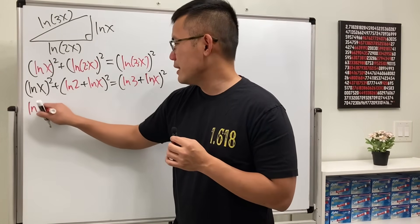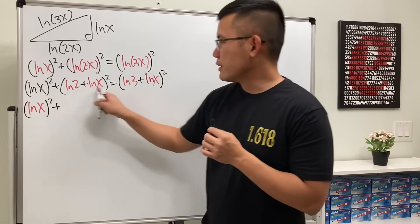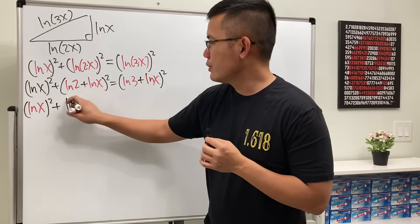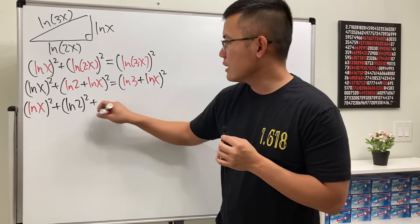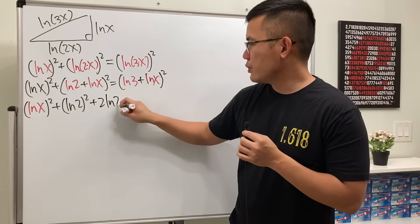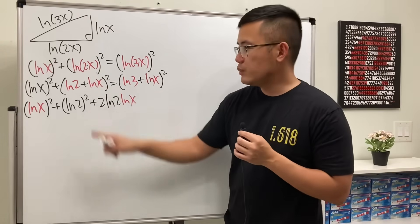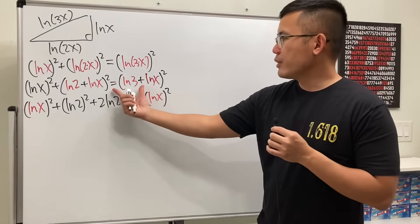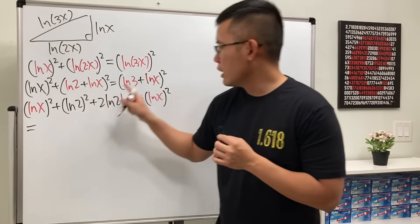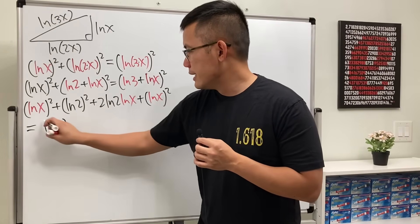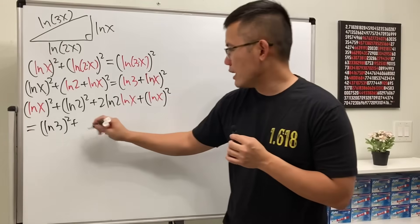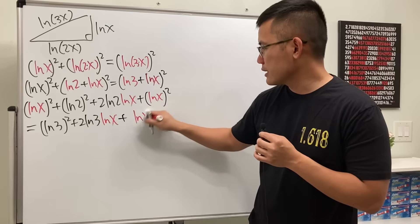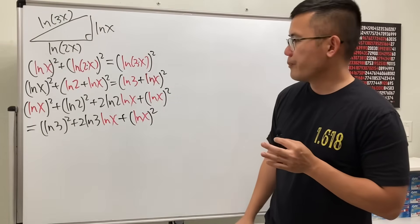Now let's expand everything. The first term stays as ln²(x). For the middle binomial squared, we get ln²(2) plus 2·ln(2)·ln(x) plus ln²(x). On the right-hand side, expanding (ln(3) + ln(x))² gives ln²(3) plus 2·ln(3)·ln(x) plus ln²(x).